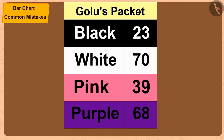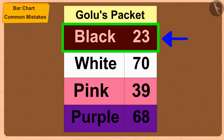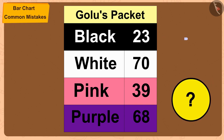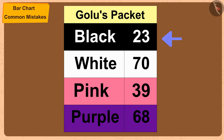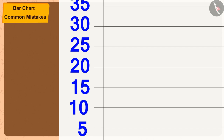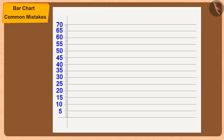But Chanda, the number of black balloons here is 23, and 23 is not a multiple of 5. So, how can we show 23 on this bar chart? There is a very easy solution for this too. We have to make 5 small equal parts between these numbers. Now, can you show 23 on this scale?